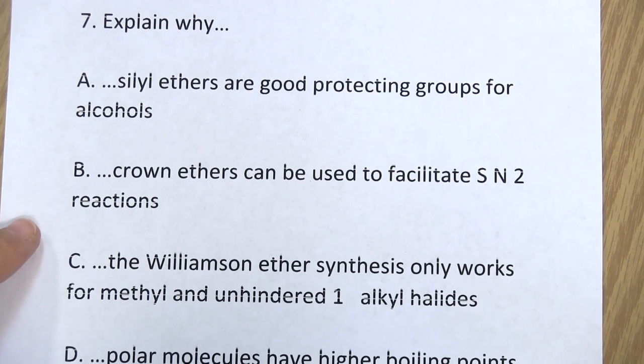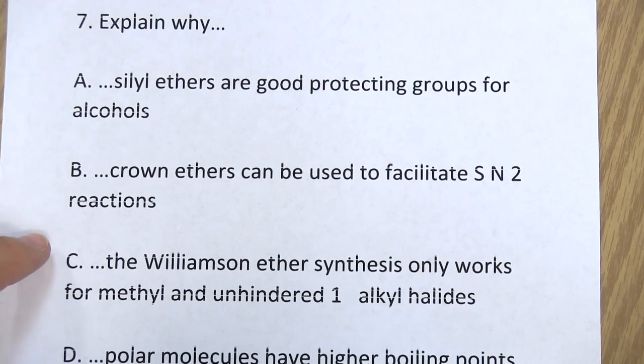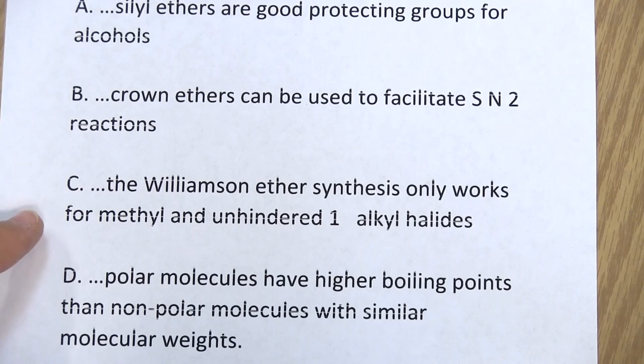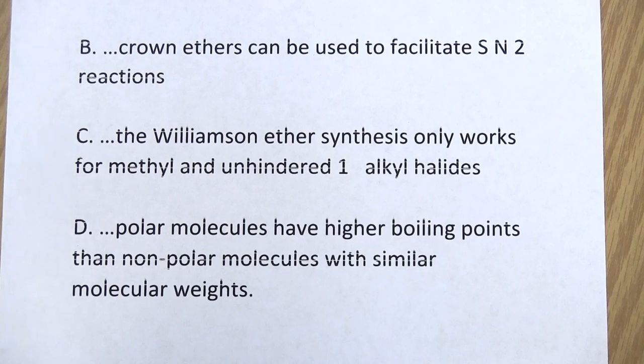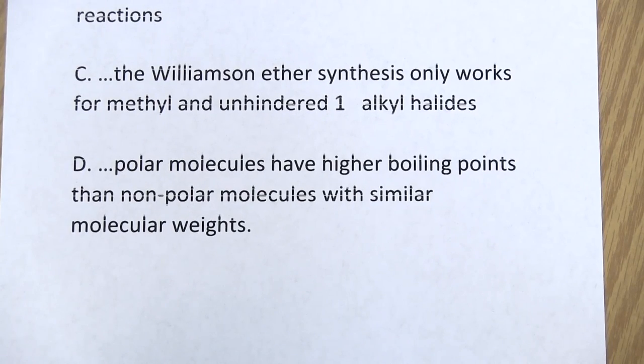The question reads that you should explain why. The first segment is, silyl ethers are good protecting groups for alcohols. Second part, explain why crown ethers can be used to facilitate SN2 reactions. Third part, explain why the Williamson ether synthesis only works for methyl and unhindered 1-degree alkyl halides. And the last part, explain why polar molecules have higher boiling points than non-polar molecules with similar molecular weight.